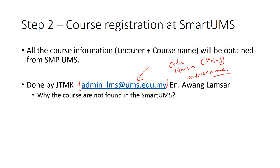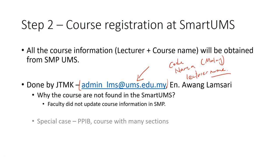You might be wondering why a course is not found in Smart UMS. This is mainly because some faculties did not update the course information in SMP before the semester. In addition, for courses with many sessions — for example, language courses at BBIB — the course coordinator needs to send a list of sessions and the lecturer responsible for each session to the Smart UMS admin before the semester starts.